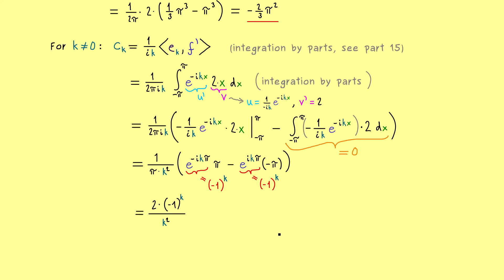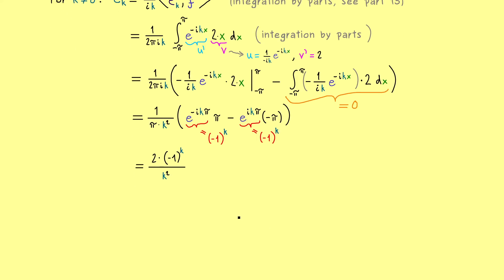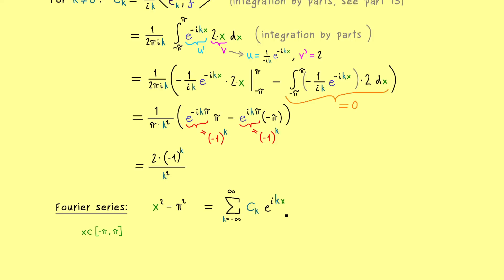Since the Fourier series converges uniformly, it also converges pointwise. So inside the interval minus π to π, our parabola equals the Fourier series, which is the infinite sum of cₖ times eₖ. Putting in the coefficients — c₀ separately and then all the other cₖ's — we have minus (2/3)π² plus an infinite sum, where inside we find our coefficients times the exponential function. We should apply Euler's formula here.